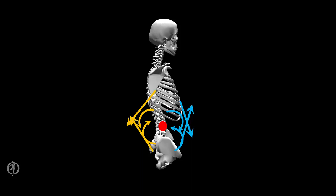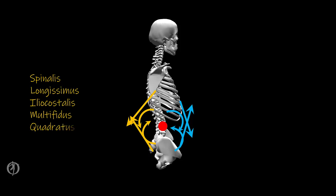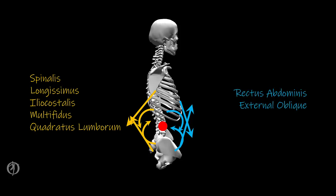MTCs that will create a torque that will extend the thoracolumbar spine include the spinalis, the longissimus, and the iliocostalis — the three of which collectively are known as the erector spinae — along with the multifidus and the quadratus lumborum. MTCs that will create a torque that will flex the thoracolumbar spine include the rectus abdominis, the external oblique, the internal oblique, and the psoas major.